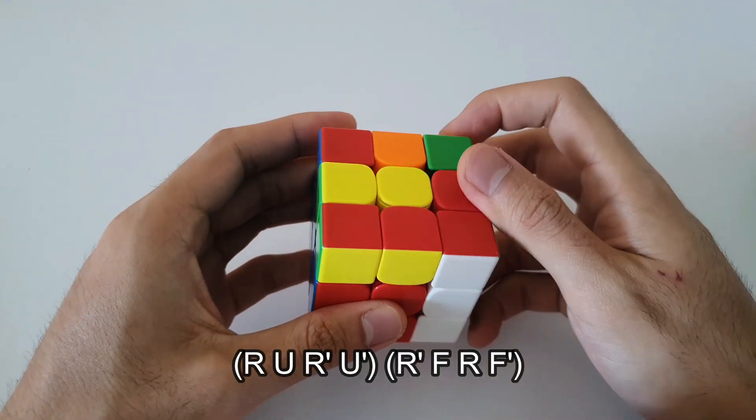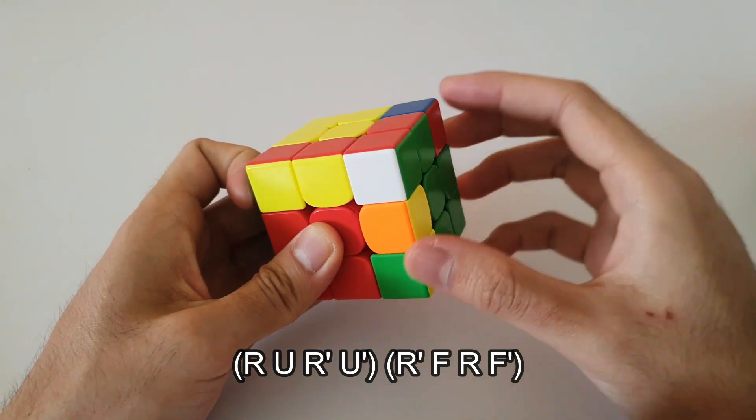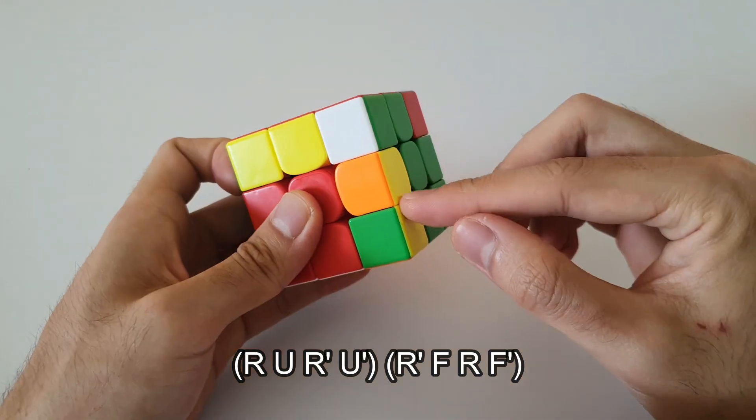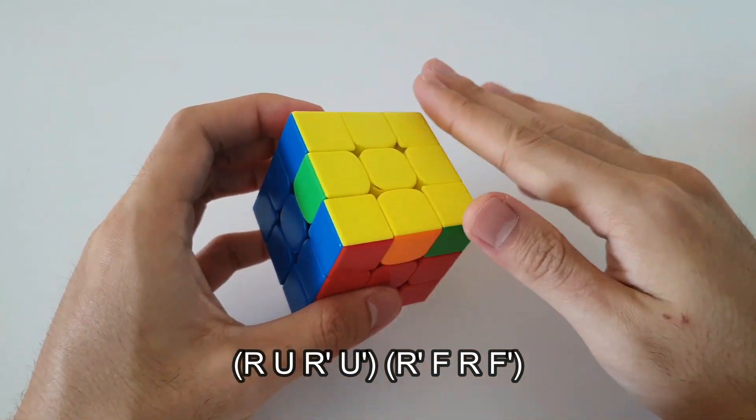followed by a sledge. Or you can focus on this F2L pair, inserting it into this slot here with a sledge hammer. And that solves that case.